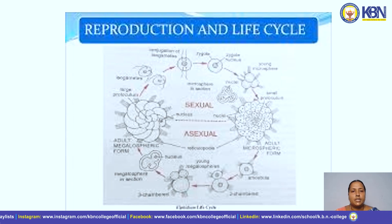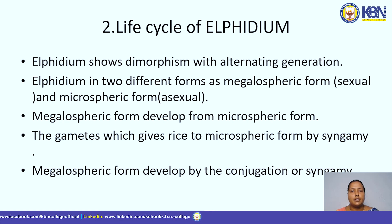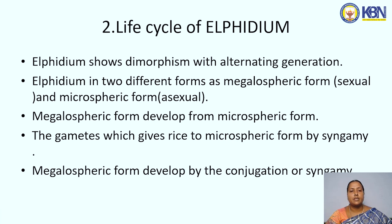Another topic is reproduction and life cycle of Elphidium. In the Elphidium life cycle, we can observe dimorphism with alternating generation. Elphidium exists in two different forms: megalospheric form, which is sexual, and microspheric form, which is asexual. Megalospheric form develops from microspheric form gametes, which gives rise to the microspheric form by syngamy. Megalospheric form is developed by conjugation or syngamy.